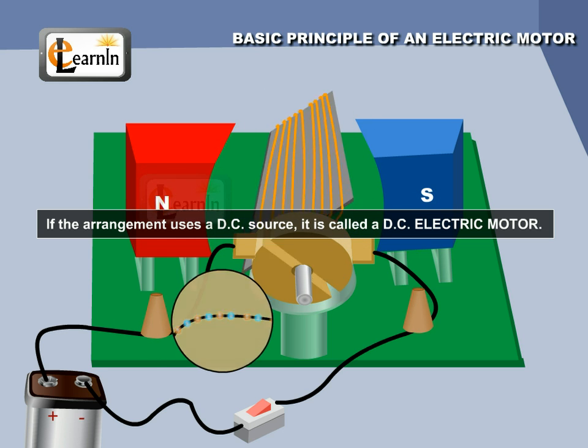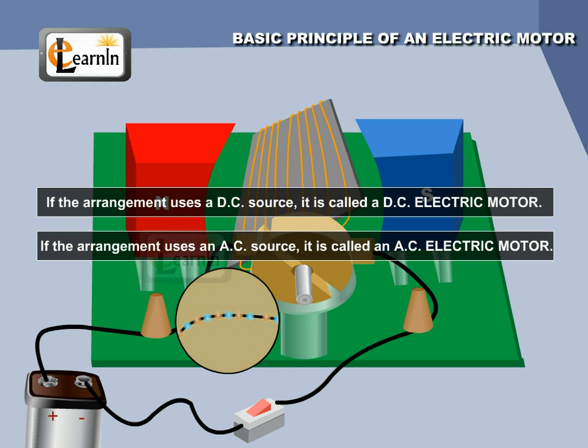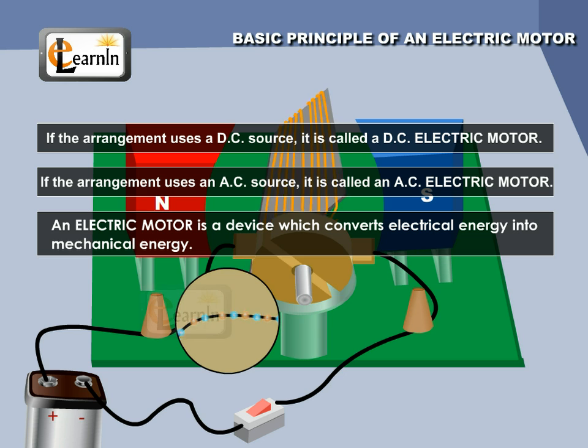If the arrangement uses a DC source, it is called a DC electric motor, and if it uses an AC source, it is called an AC electric motor. An electric motor is a device which converts electrical energy into mechanical energy.